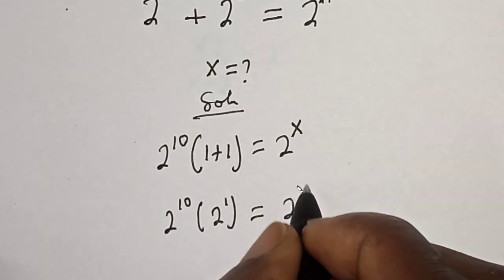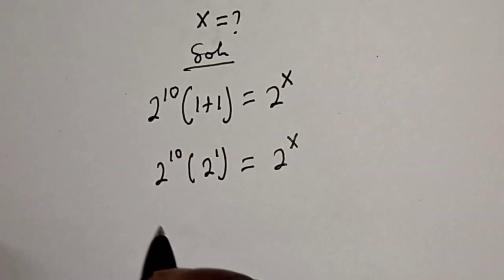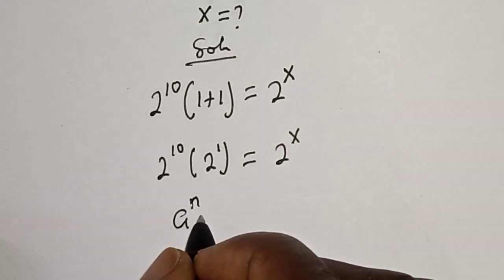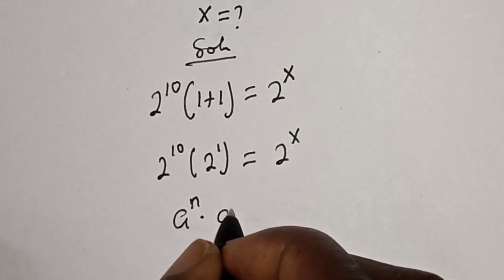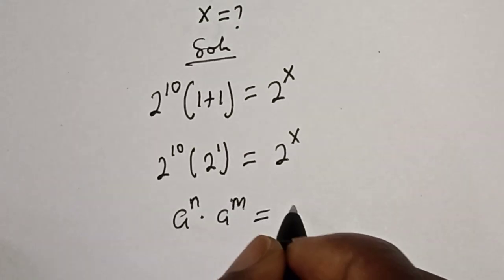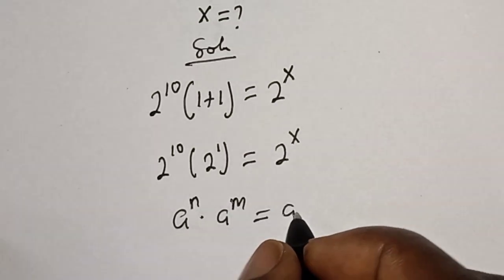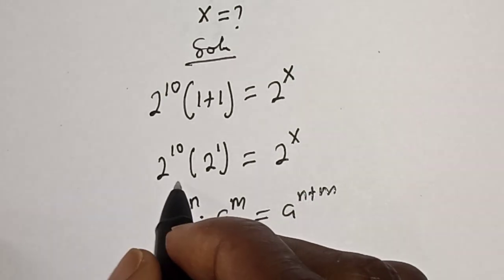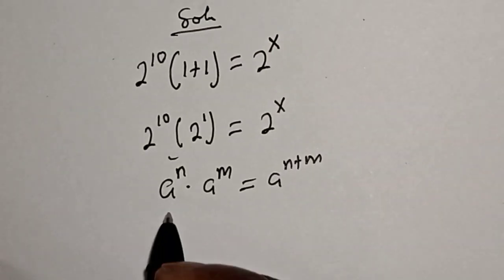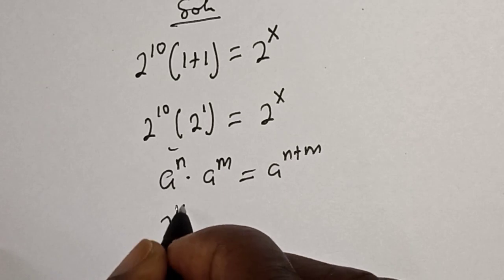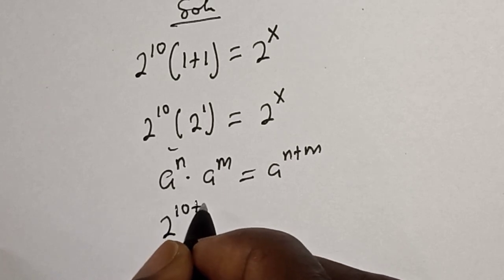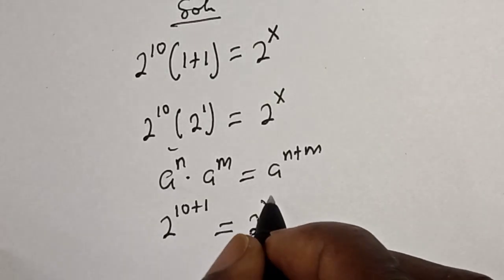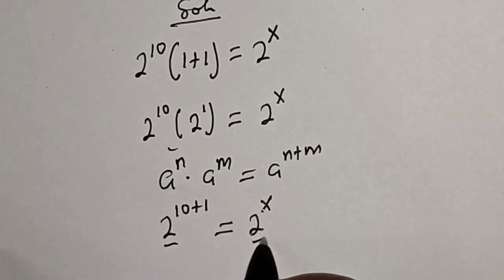Take note of this rule: if you have a raised to power n multiplied by a raised to power m, this is equal to a raised to power n plus m. Then the left hand side becomes 2 raised to power 10 plus 1, equal to 2 raised to power x. We have the same base.